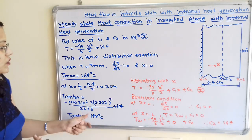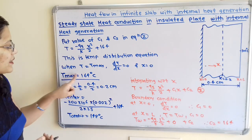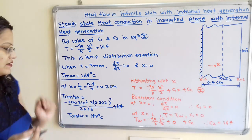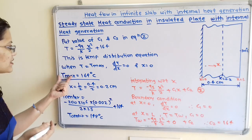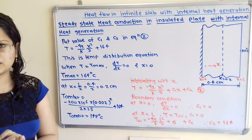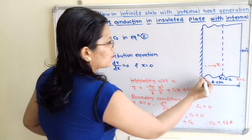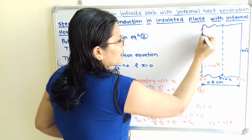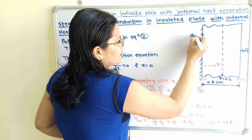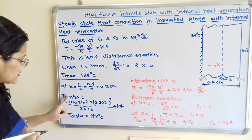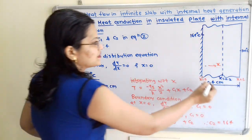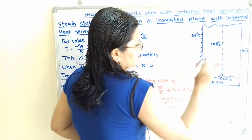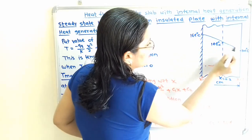We can now show both temperatures on the diagram. The maximum temperature of 164 degree Celsius occurs at x equal to 0, which is the insulated side. The temperature at the center is 148 degree Celsius, which lies between 100 and 164 on the diagram. When we join these points we get the temperature distribution curve across the plate.